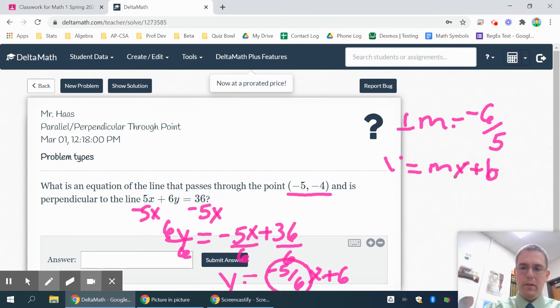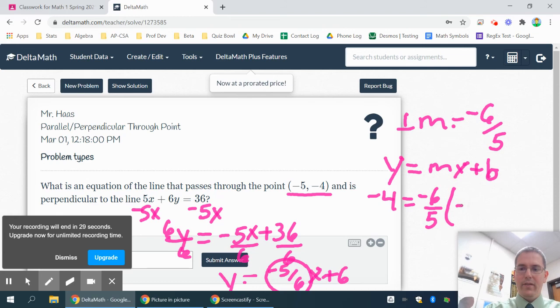My pen's being a little special. And then plug in the negative 4 where the y is. My m is my negative 6 fifths. And my x-coordinate is negative 5 plus b. Multiply here.